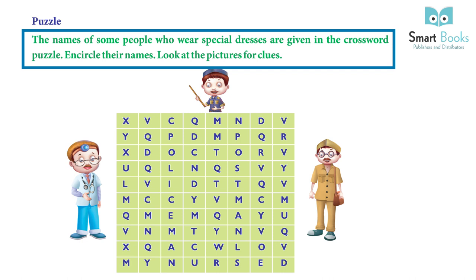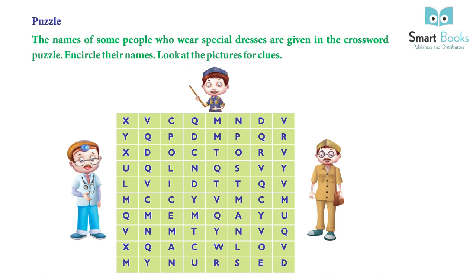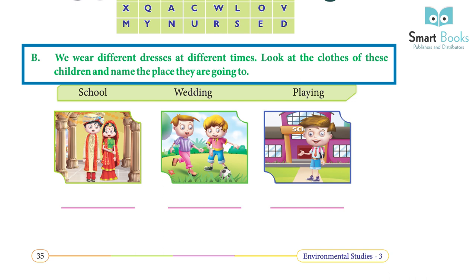Puzzle: The names of some people who wear special dresses are given in a crossword puzzle — find and circle their names using the picture clues. Activity: We wear different dresses at different times. Look at the clothes of these children and name the place they are going to — one: wedding, two: playing, three: school.